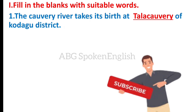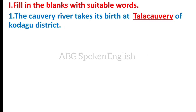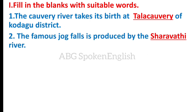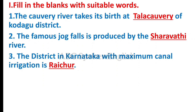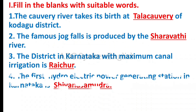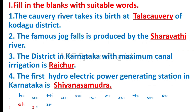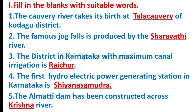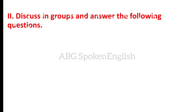Jogjal path is produced by the Sharawati river. The district in Karnataka with maximum canal irrigation is Raizuru. The first hydroelectric power generating station in Karnataka is Shivansamudra. The Alamatti dam has been constructed across the Krishna river. Discuss in groups and answer the following questions.